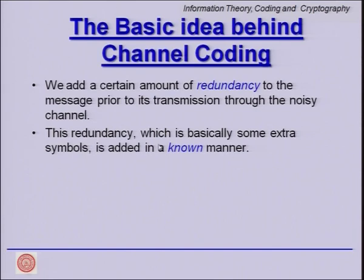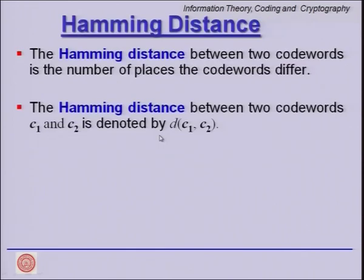Noise randomly breaks the structure, but we use that inbuilt mathematical structure to recover from the erroneous bits. This is the general idea in layman's language. We have defined some mathematical tools: we talked about the Hamming distance between two codewords as the number of places the codewords differ, denoted by d(c1, c2).